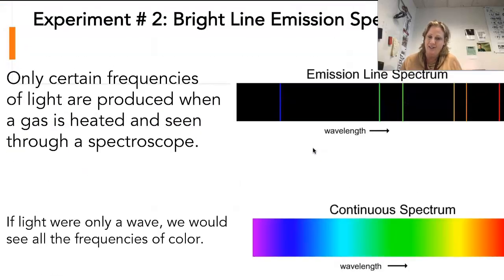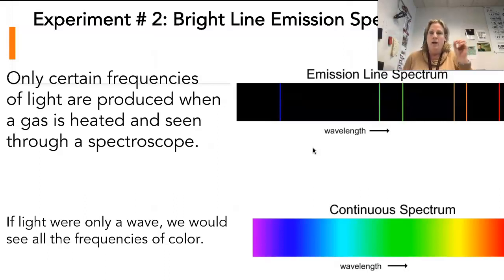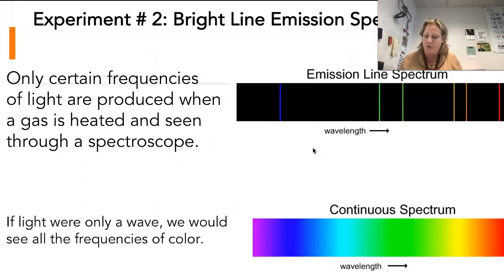The second reason why we now know that light is made up of particles — and is also a wave — is the bright line emission spectrum. If you look at light through a spectroscope, or see a drop of water in the light, or a diamond, white light will break apart into what we call a continuous spectrum. The continuous spectrum has all of the wavelengths of all possible colors.